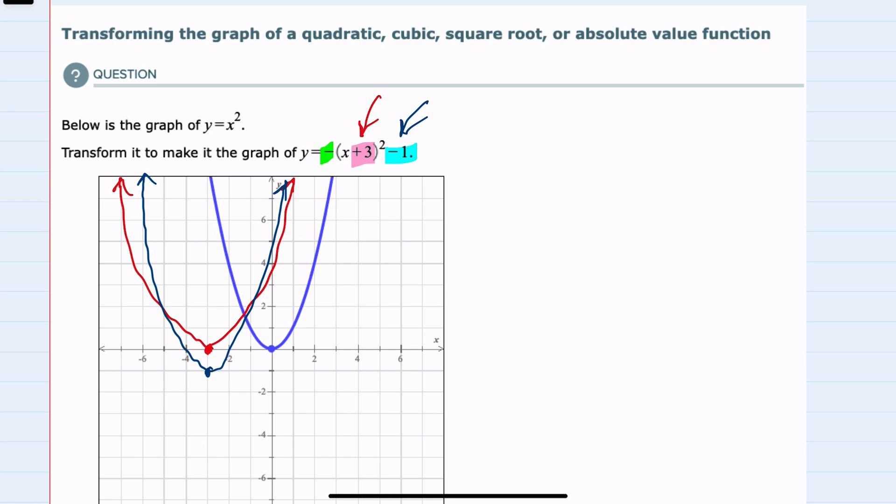And then lastly, the minus out in front will flip our graph upside down. So since this is our final graph, I'll erase the intermediate steps. We have shifted to the left three, shifted down one, and then flipped our graph upside down.